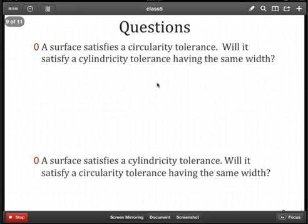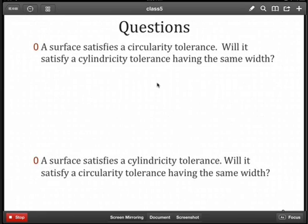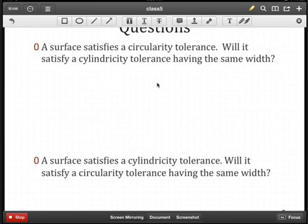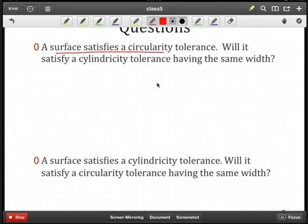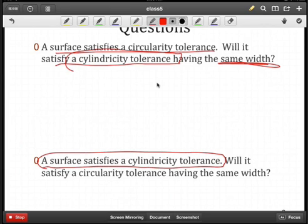So here are two questions that you should be able to answer at this point. First of all, I look at a surface and it satisfies a circularity tolerance of some width. Then I want to note, will it satisfy a cylindricity tolerance also having the same width? And then the complement question here is, suppose I have a surface that satisfies a cylindricity tolerance of a known width. Next, will it satisfy a circularity tolerance having the same width? At this stage, you should be able to answer this question and give a reason why.